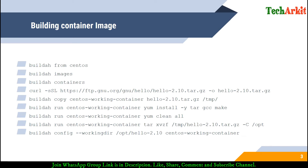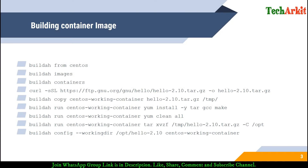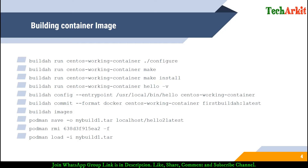Let's see how we can build a container image using an operating system version. The example we are taking here is CentOS. We'll build images, download the image, build containers, and see the working container which is currently exited. Then we'll install the application called 'hello' in that container, export it, save as a tar file, delete the existing image, and import that tar file again as a container.